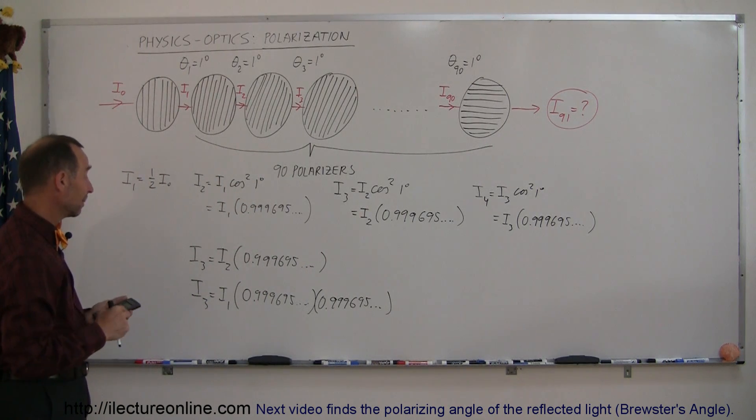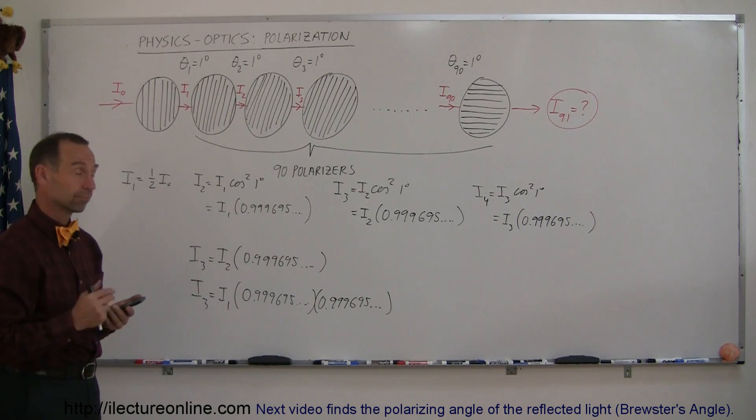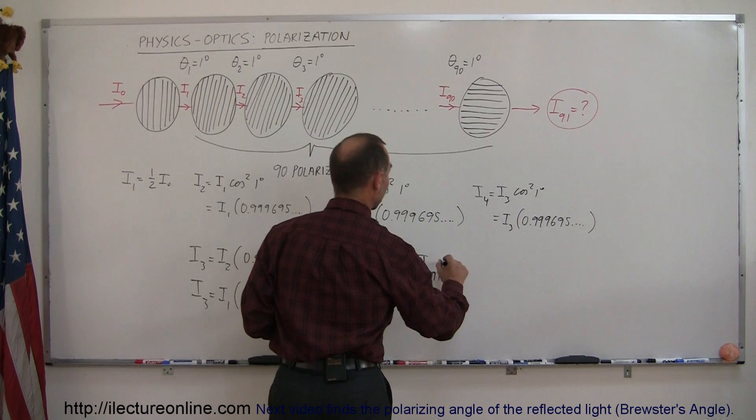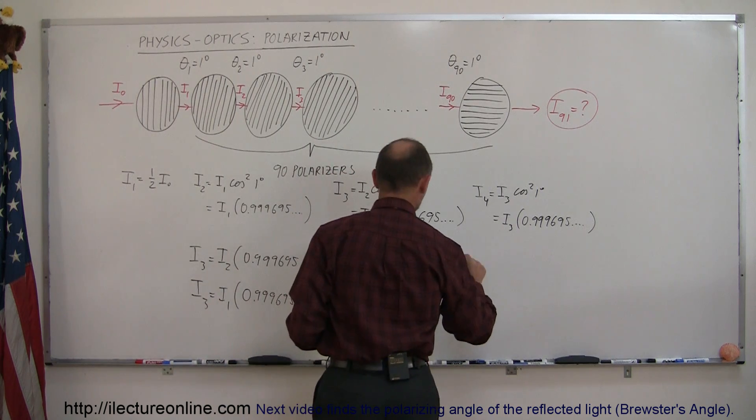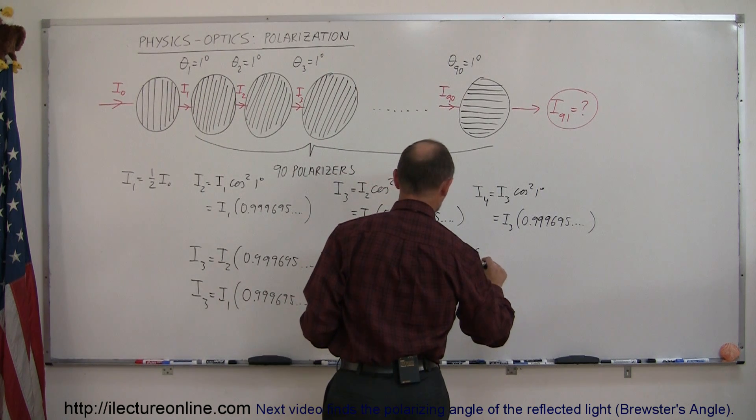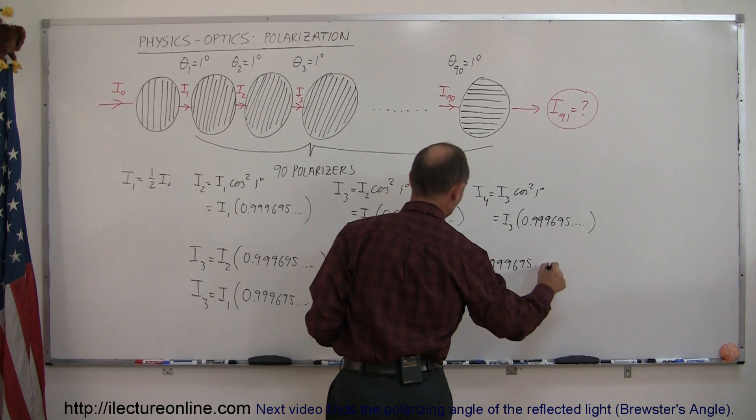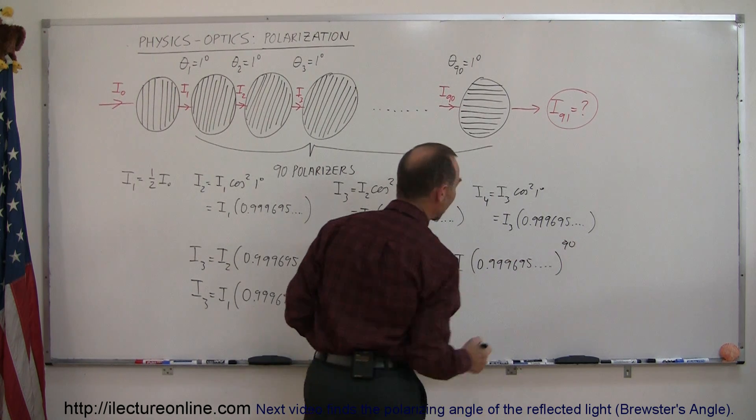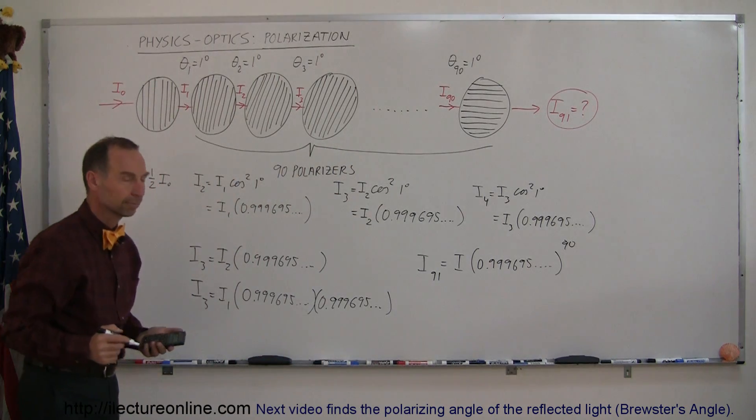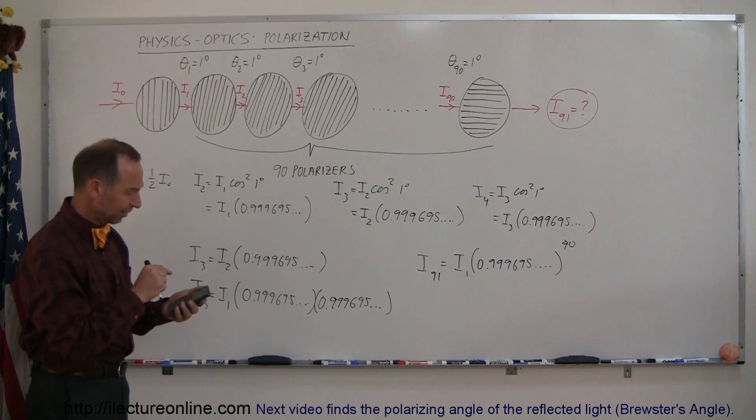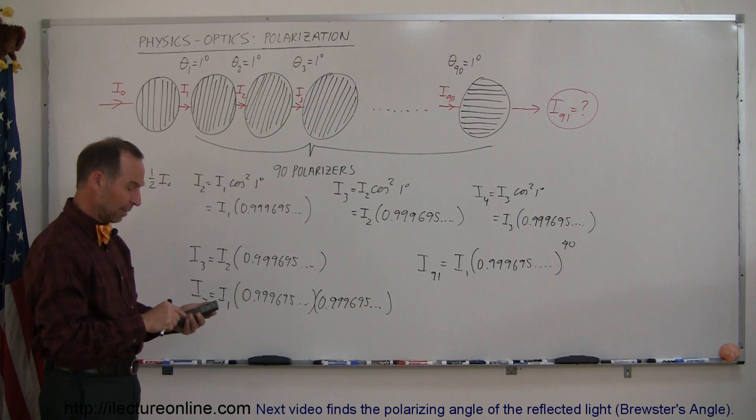So in other words, if you do that 90 times, that means that i sub 91 is equal to i sub 1 times this number 0.999695 and so forth to the 90th power. Let's do that. Let's take that number and raise it to the 90th power.